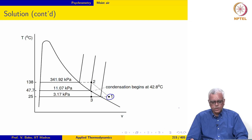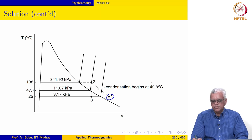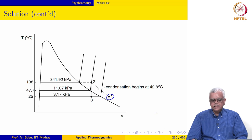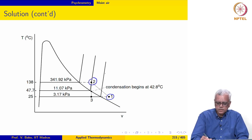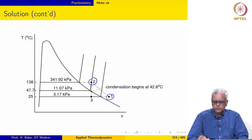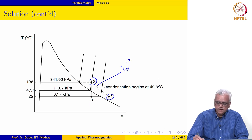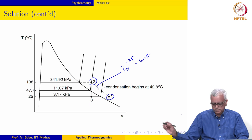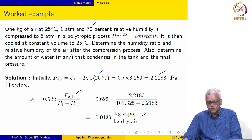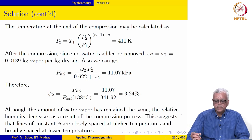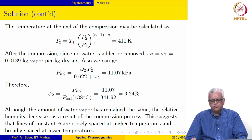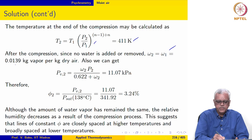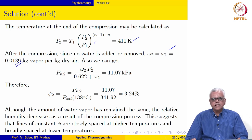This is the initial state of the water vapor at 25 degree Celsius with the given relative humidity. It is then compressed in a polytropic process, going from state 1 to state 2. The temperature at the end of compression may be evaluated using the polytropic process expression, and that comes out to be 411 Kelvin. After compression, since no water is added or removed, the humidity ratio remains the same at 0.0139 kg vapor per kg dry air.